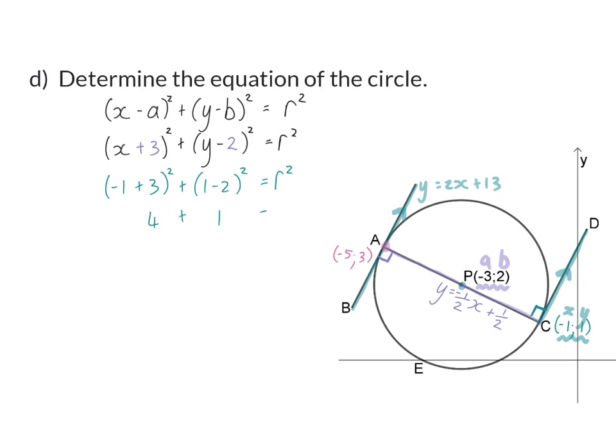If we simplify we'll have 4 + 1 = r² and therefore r² = 5. So the equation of the circle is then (x + 3)² + (y - 2)² = r² which is 5.